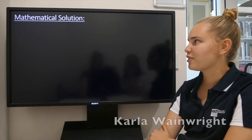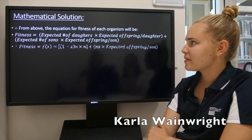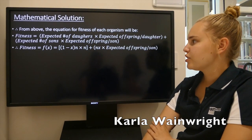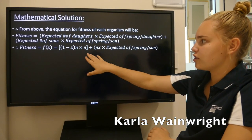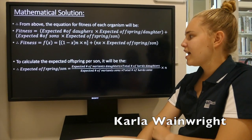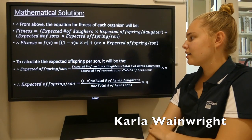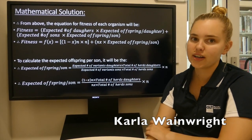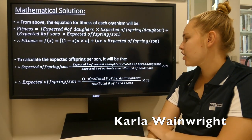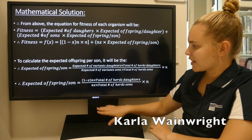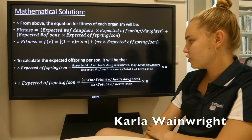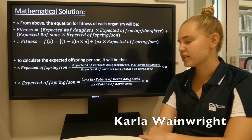My name is Carla and I will be going through the mathematical solution of Fisher's Principle. So from the previous slide, we got this as the equation for fitness of any organism. Using the conversion table and substituting in the known values, it is now evident that the only unknown is expected offspring per son. This can be calculated by doing: expected number of variant daughters times total number of herd daughters, divided by expected number of variant sons times total number of herd sons, times n. It is now clear that what we do not know is the total number of herd daughters or herd sons.